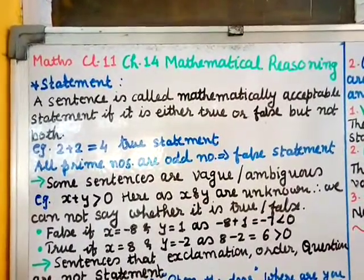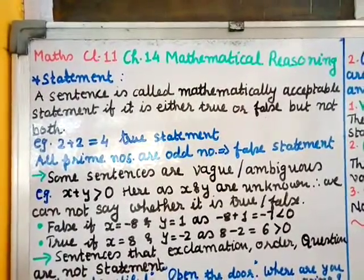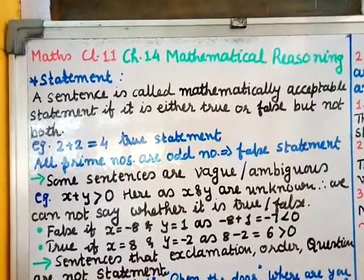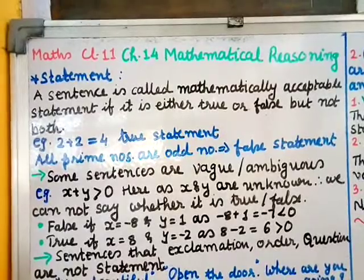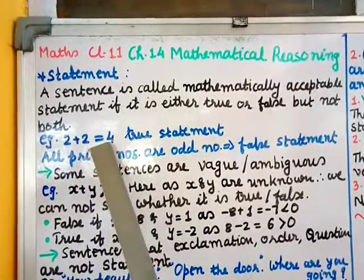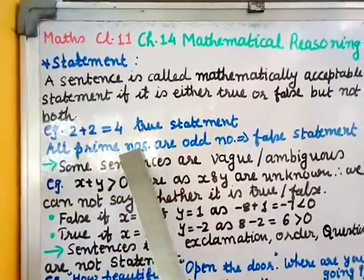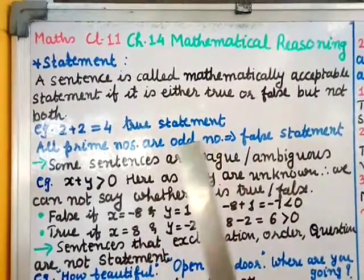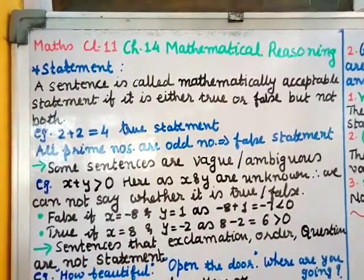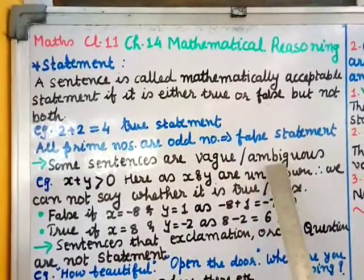That kind of sentence you cannot call a statement in mathematics. A statement means the given sentence should be either true or false — it should not be both. For example, '2 plus 2 is equal to 4' — you know that this is always true, so it is a statement. 'All prime numbers are odd numbers' is false, because 2 is prime but it is not odd, it is even. Therefore this is also a statement.